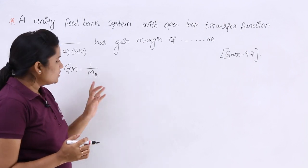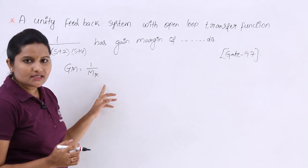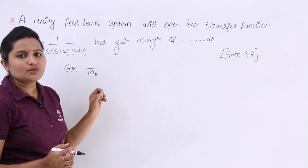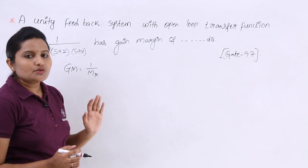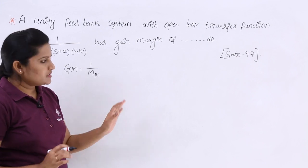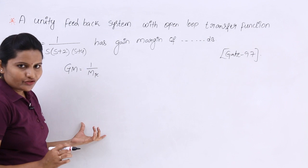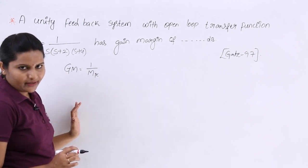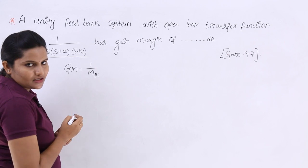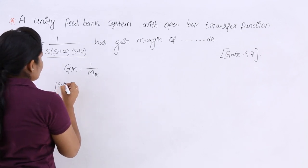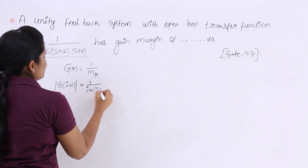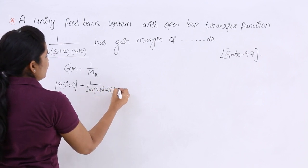To get the magnitude at the phase crossover frequency, we first need to calculate the phase crossover frequency, and then calculate the magnitude at that frequency. Working in the jω domain, the magnitude of G(jω) is equal to 1 divided by jω times (2 + jω) times (4 + jω).